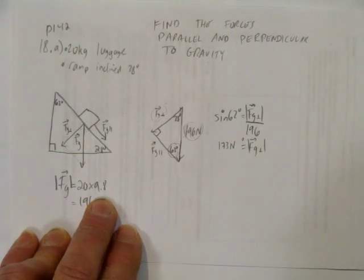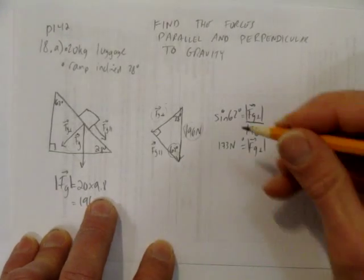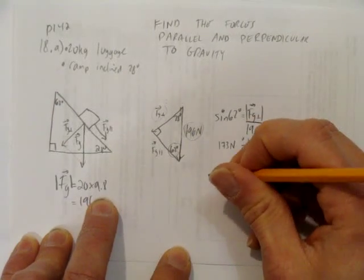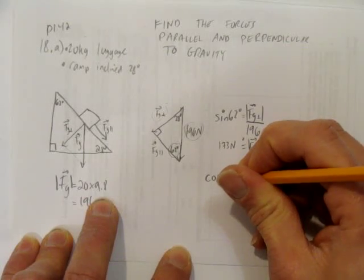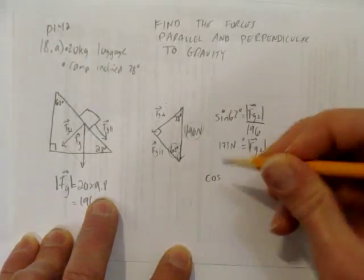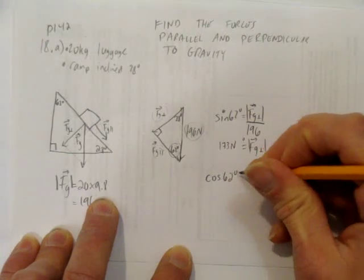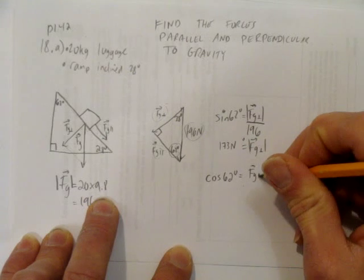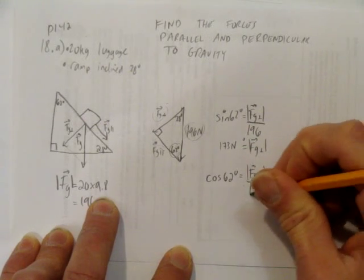So we've got that force. And then we'll need to find the force of gravity parallel. So that's cosine. How do we know it's cosine? Because it's now adjacent and hypotenuse. So the cosine of 62 degrees is the force of gravity parallel's magnitude over 196.